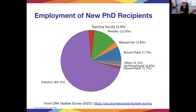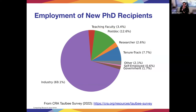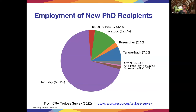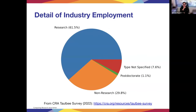Tenure-track research faculty was roughly 7.7%, and teaching faculty about 10% across those types of positions. So the majority of people do go into industry. We have panelists that span all the different areas you might go into. That was surprising to me too — I didn't realize how much was industry.